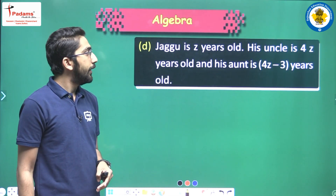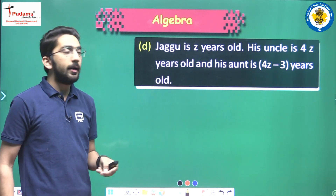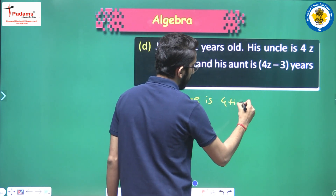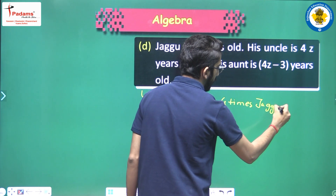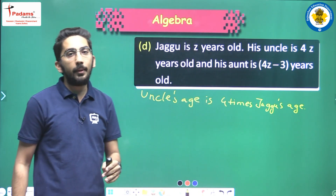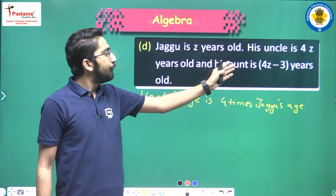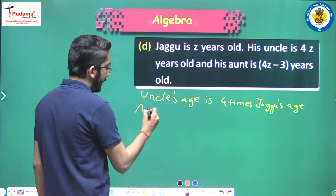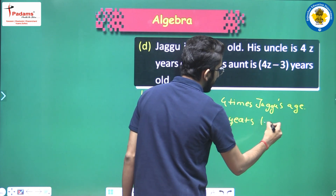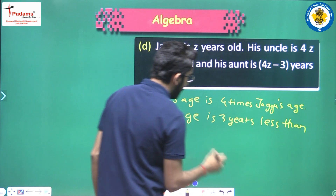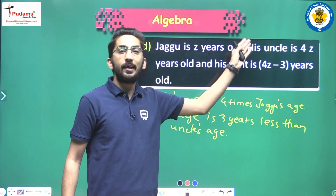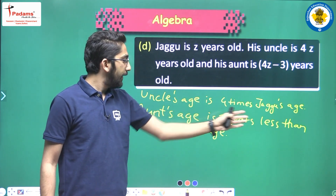Jaggu is z years old. His uncle is 4z years old and his aunt is 4z minus three years old. In ordinary language: Jaggu's uncle's age is four times Jaggu's age, and Jaggu's aunt is three years younger than Jaggu's uncle.